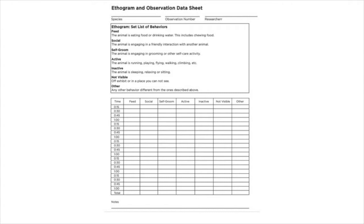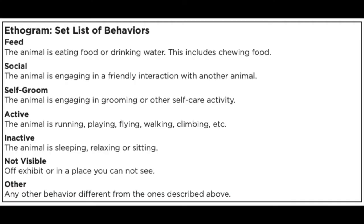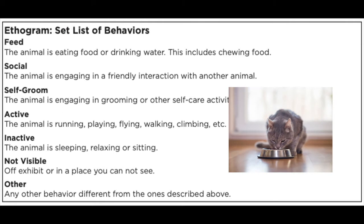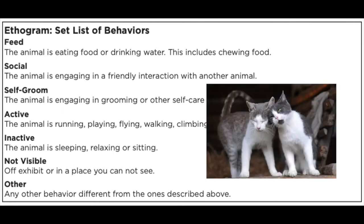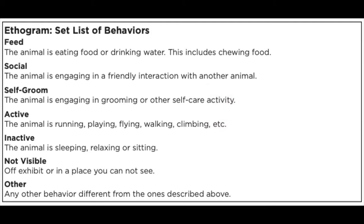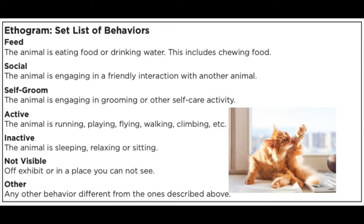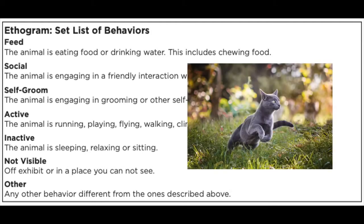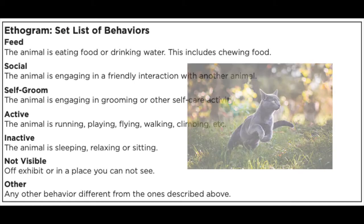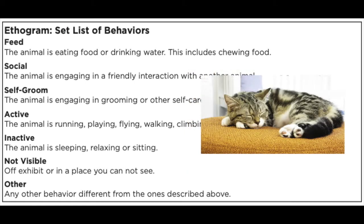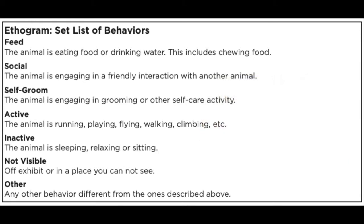With this ethogram, the researcher records behavior every 15 seconds using a basic list of behaviors: Feeding — is the animal eating or drinking? Socializing — is the animal interacting with another animal? Self-groom — is the animal grooming? Active — is the animal running, playing, walking, etc.? Inactive — is the animal sleeping or sitting? Not visible — is the animal someplace you can't see them? Or other — is there a behavior happening that's different from what was already mentioned?